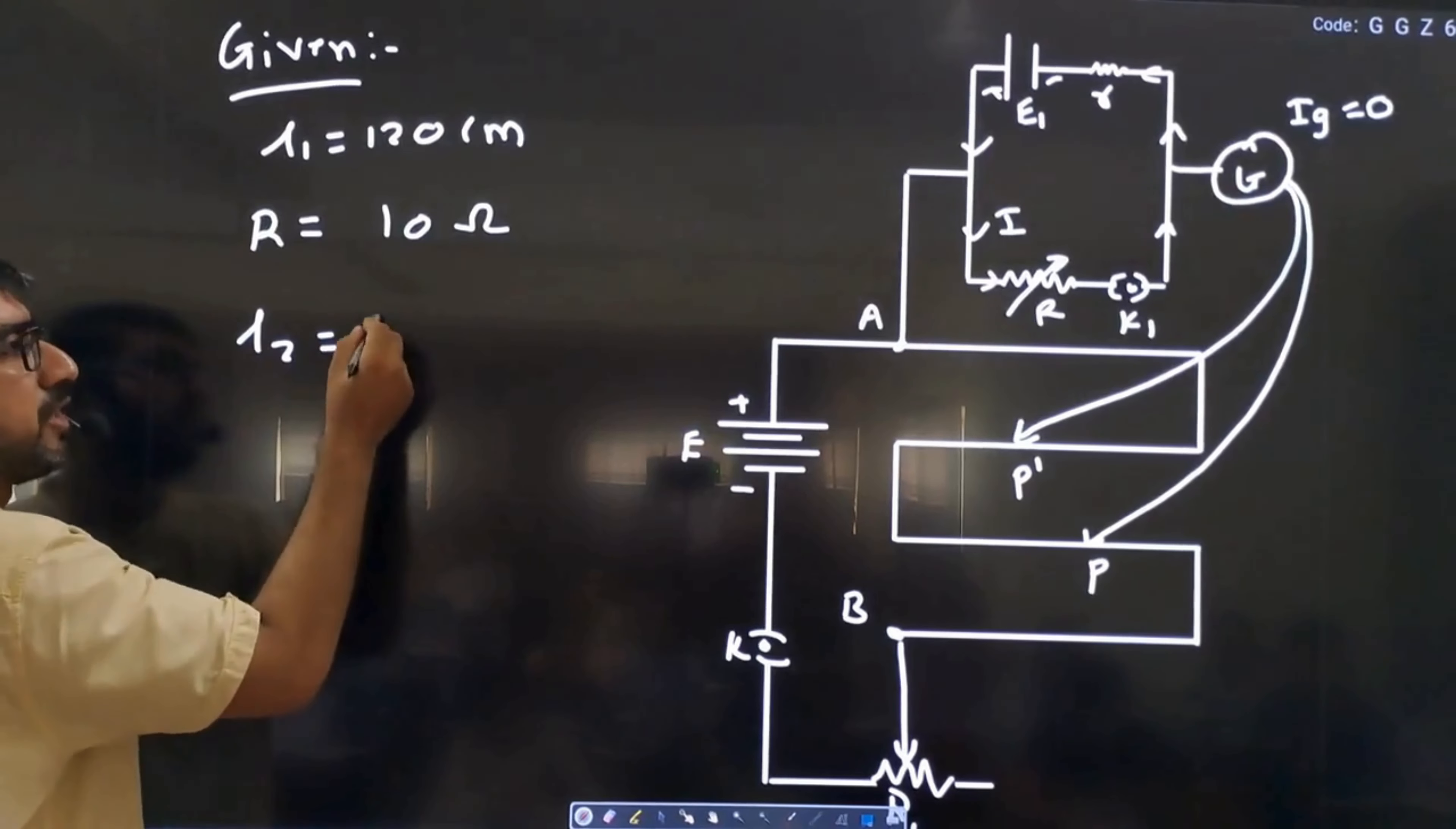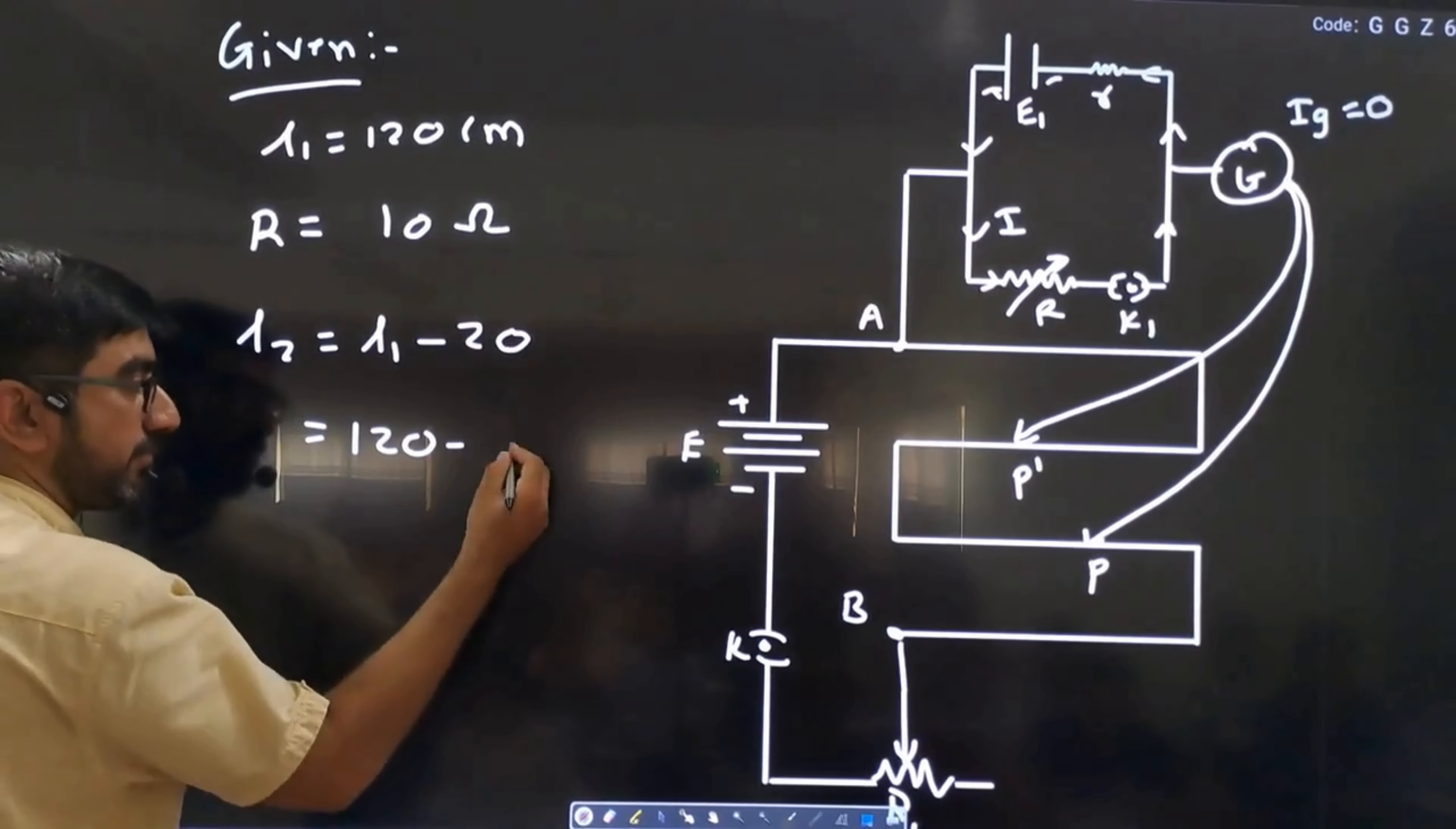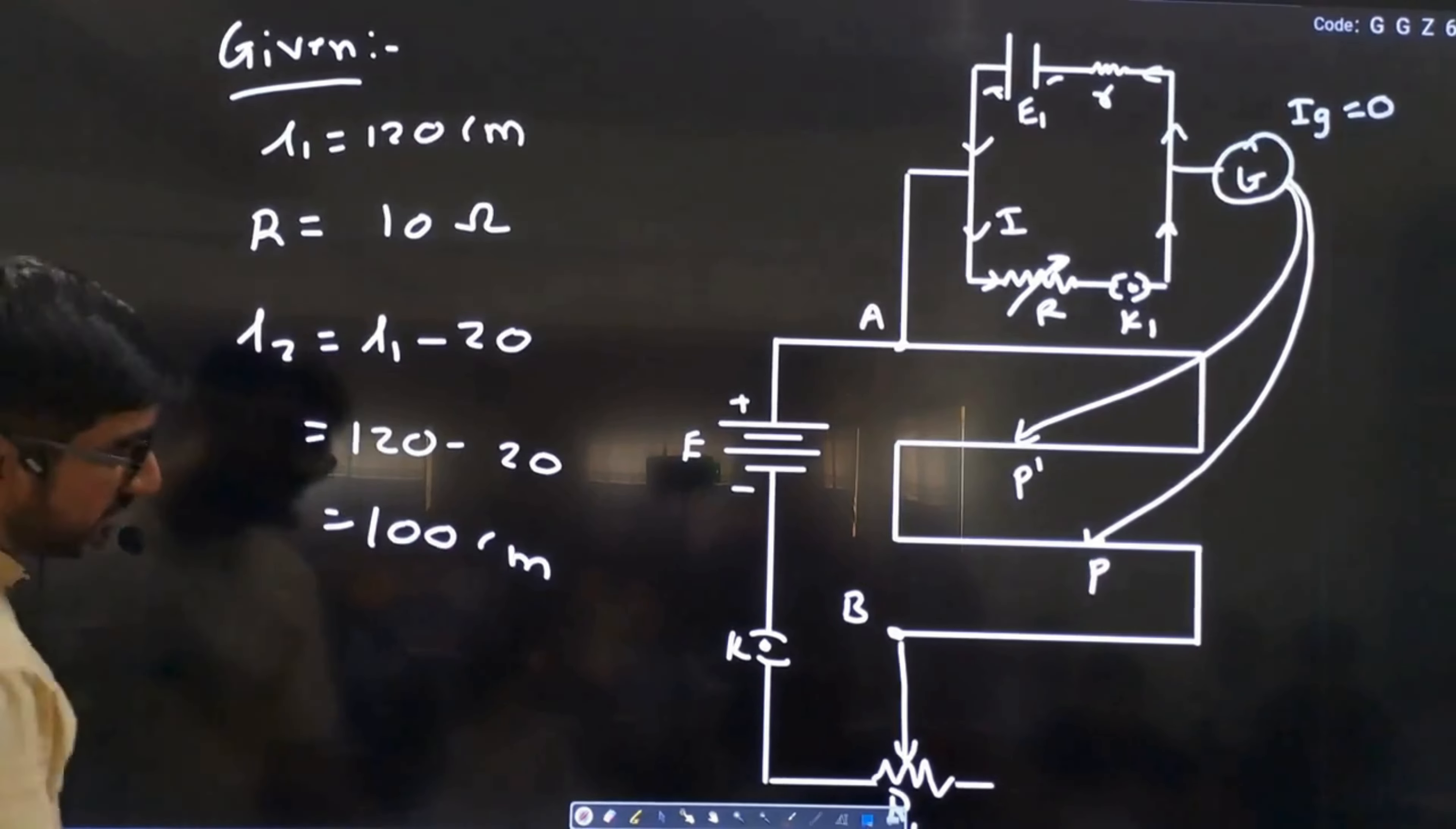In this case, the balancing length is reduced by 20 cm. So L2 is L1 minus 20 cm, that is 120 minus 20, that is 100 cm.